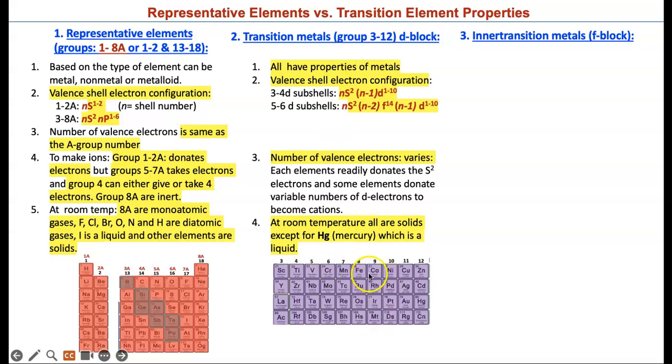If you look at transition metals, the D block, they are groups 3 to 12. They are all metals. They have valence electron configurations of various kinds. The 3 to 4 D subshells have ns2, n-1, d1 to 10 electron configuration. Here's an example of niobium. He's in 4D shell, and he has 3 electrons. So I wrote 4d3. His S subshell is 1 greater than that. So it should be 5s2.